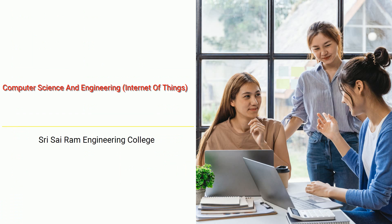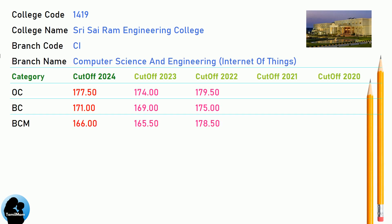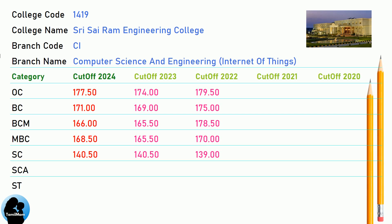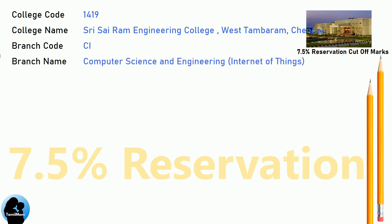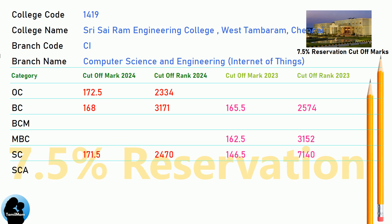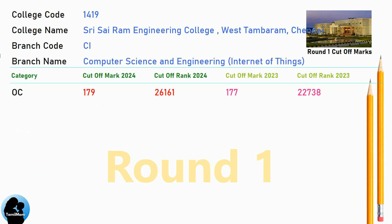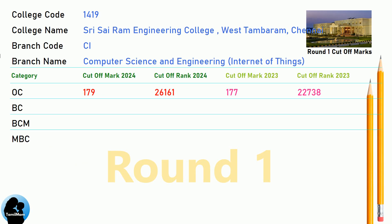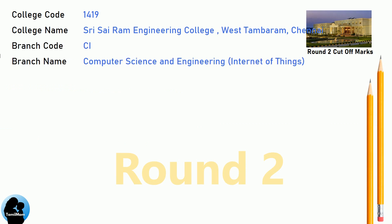DNA Cut-off for Shri Sai Ram Engineering College in Computer Science and Engineering. DNA 7.5 Reservation Cut-off for Shri Sai Ram Engineering College in Computer Science and Engineering. DNA 8.5 Reservation Cut-off for Shri Sai Ram Engineering College in Computer Science and Engineering Internet of Things. DNA Round 2 Cut-off for Shri Sai Ram Engineering College in Computer Science and Engineering Internet of Things.